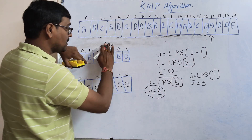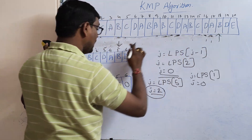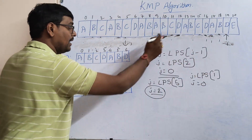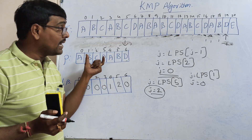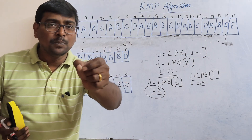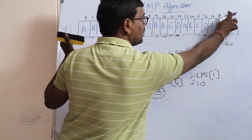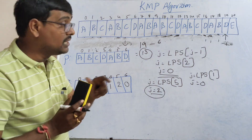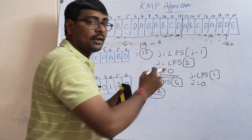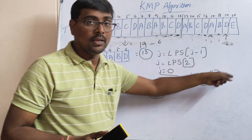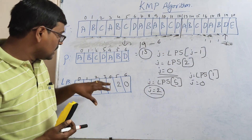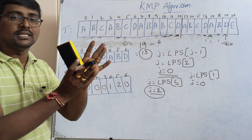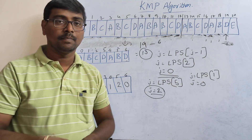Continuing: 'a' and 'a' match, 'b' and 'b' match, 'd' and 'd' match — the pattern is now fully matched. The pattern is available. To find the starting position: i is at index 19, and the pattern length is 7 (indices 0–6), so the starting index is 19 minus 6 = 13. From the 13th index, the pattern 'abcdabd' is available. This is the KMP algorithm — whenever there is a mismatch, update j using the LPS table.